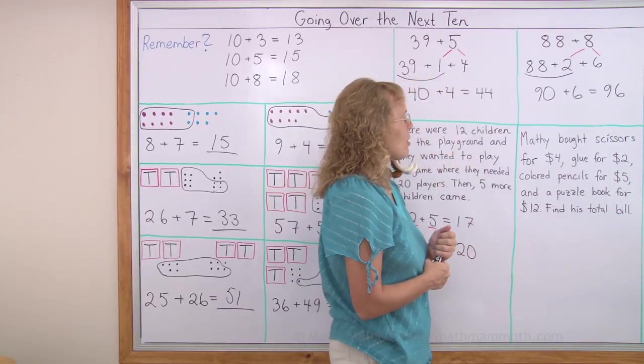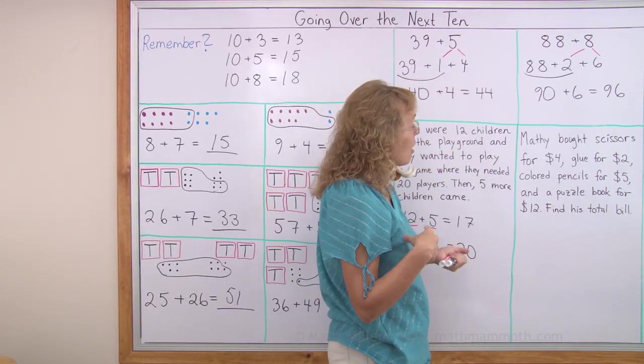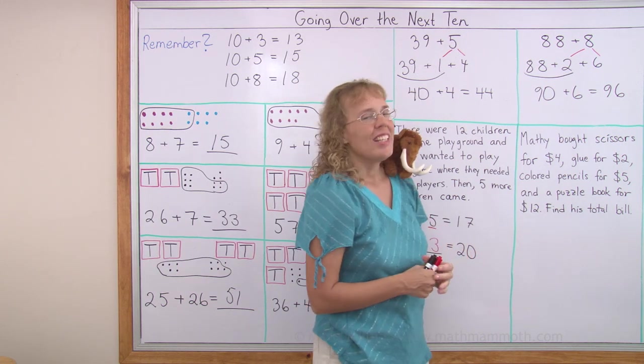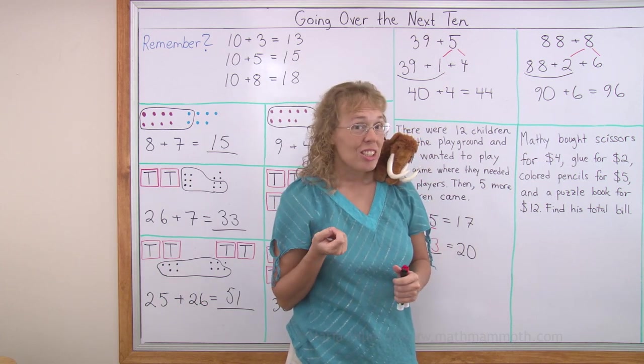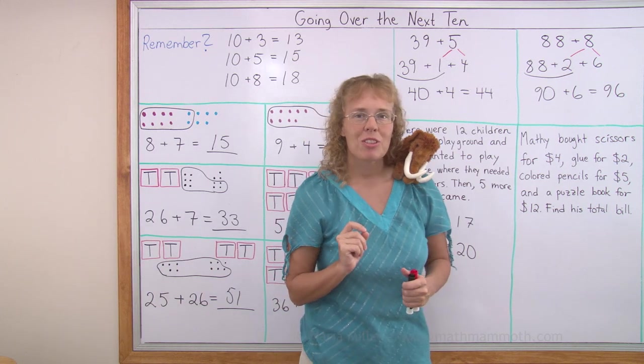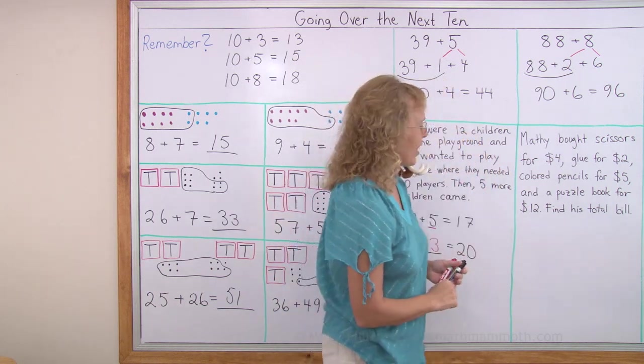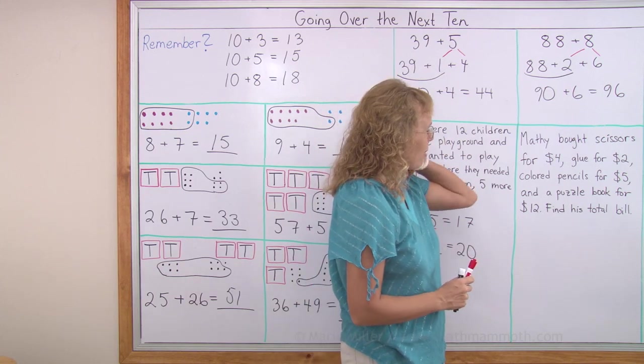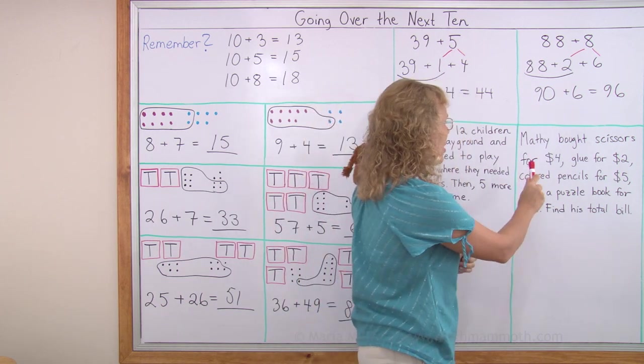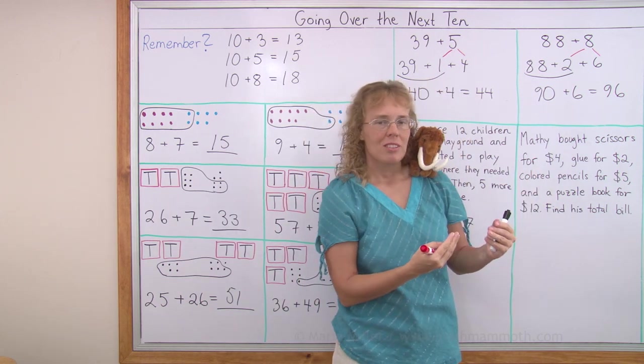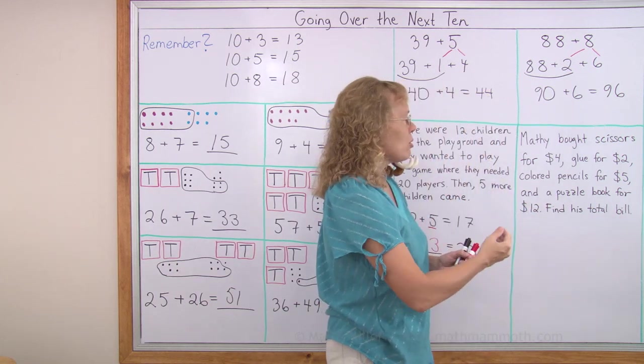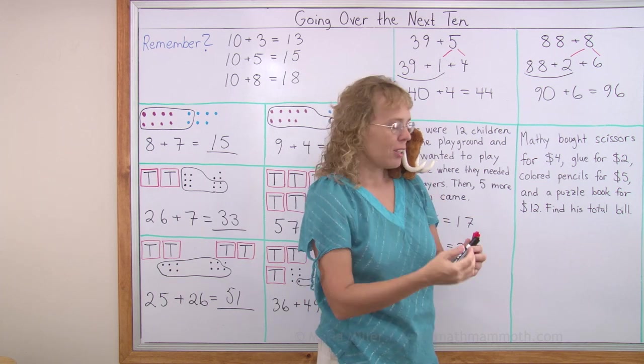Matthew bought scissors for $4, glue for $2, colored pencils for $5, and a puzzle book for $12. Find his total bill. Now this is a little challenging problem if you are in first grade. Again, don't worry. We are going to use some dots to solve it, and that will make it easy, right? I think Matthew is planning to do some coloring and cutting in his puzzle book. We have all these numbers. And what do we need to do?